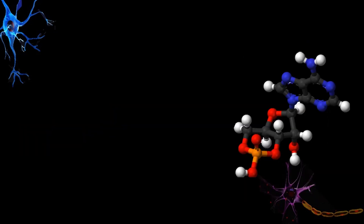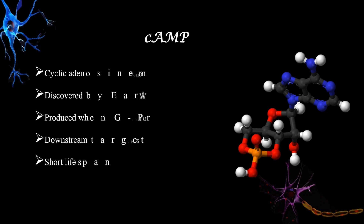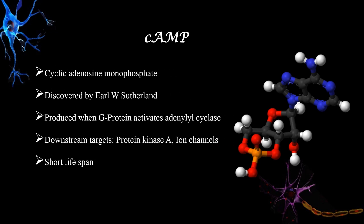The first type of secondary messengers are cyclic nucleotides, which consist of the two major secondary messengers: cAMP and cGMP. Cyclic adenosine monophosphate was discovered by Earl W. Sutherland. cAMP is produced when a G protein activates adenylyl cyclase, and its downstream targets are protein kinase A, ion channels, etc. Compared to cGMP, cAMP has a very short lifespan.